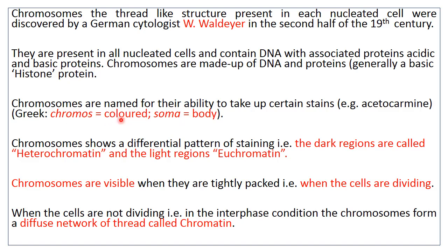Chromosomes show a differential pattern of staining — that is, all chromosomes do not stain uniformly. Certain parts of the chromosome become darkly stained; these dark regions are called heterochromatin, whereas the light regions are called euchromatin. This shows that chromosomes display a variable pattern of condensation.